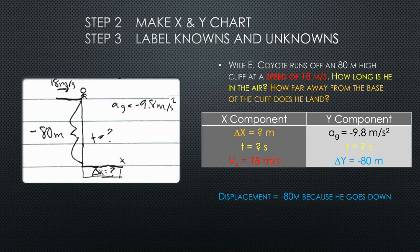Next, make the X and Y chart and label your known and unknown values. Just like the picture, negative 9.8 meters per second squared for acceleration due to gravity should be the first thing you write on the Y component side. The cliff is 80 meters high, but since Wiley is falling down, his displacement is negative 80 meters.